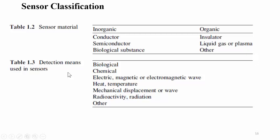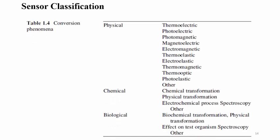Based on the detection parameter, sensors are used in biological applications, chemical industries, chemical reactors, or other applications involving electric, magnetic, and electromagnetic wave detection, heat and temperature, mechanical displacement or wave-related applications, angular displacement or linear displacement, and radioactivity and radiation-based sensors.